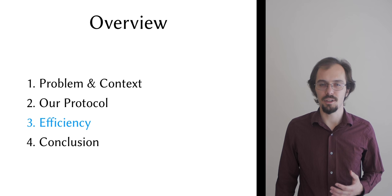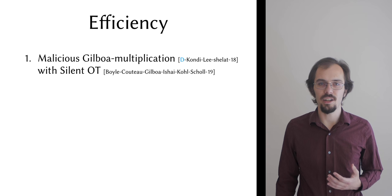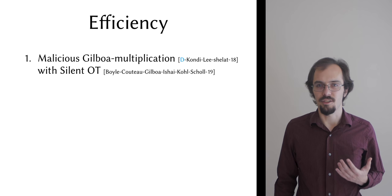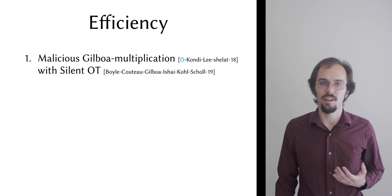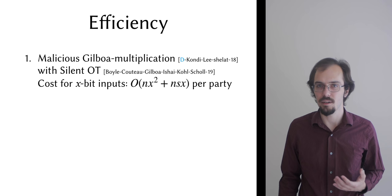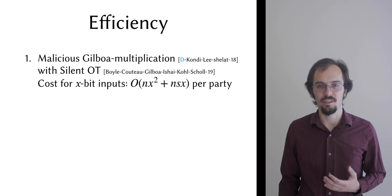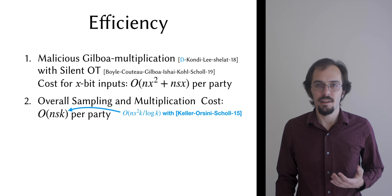Now before I close, I want to talk a little bit about efficiency. I've been qualifying my complexity statements throughout this talk by saying that they hold if multiplication has a quadratic cost. In the malicious setting, we instantiate our multiplication functionality using an OT-based construction derived from multipliers introduced by recent works on secure ECDSA signing. As a basis, we use the silent OT extension scheme introduced last year by Boyle, Couteau, Gilboa, Ishai, Kohl, and Scholl, which has almost no overhead when amortized. But the multiplier construction itself requires a special encoding scheme, which means that it has communication cost in O of n x squared plus n s x per party for n parties and x bit inputs, where s is the statistical security parameter. This leads to an overall communication complexity in O of n s k for sampling and modulus construction. As an aside, if we use the OT extension protocol of Keller, Orsini, and Scholl instead of silent OT, then this cost goes up by a factor of s over log of k, which is concretely something like 4 to 8.